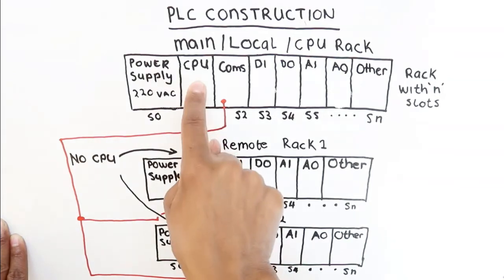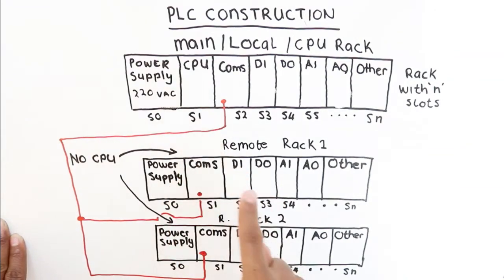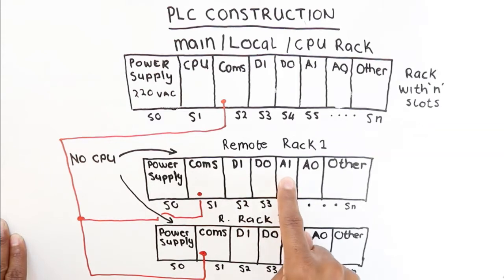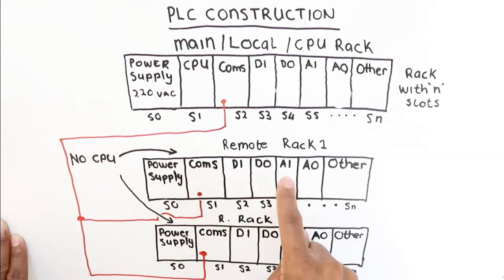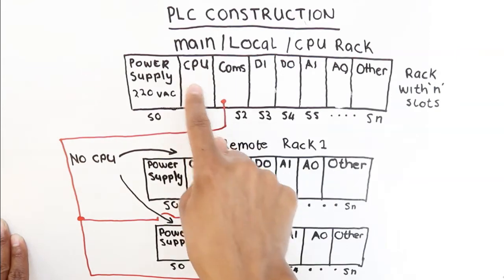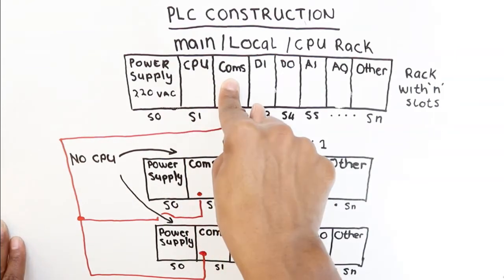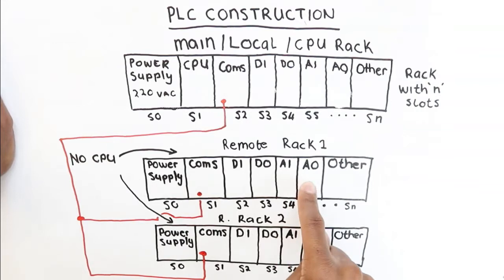It means that when the CPU requests information coming in from this analog input card, the comms card will read this information from this particular card and send it to the comms card of the main rack where the CPU can access the signals.